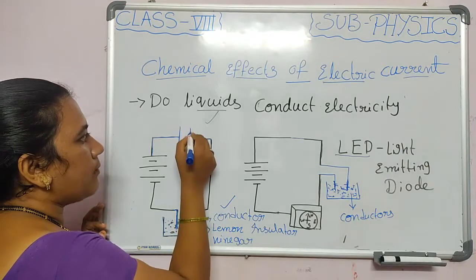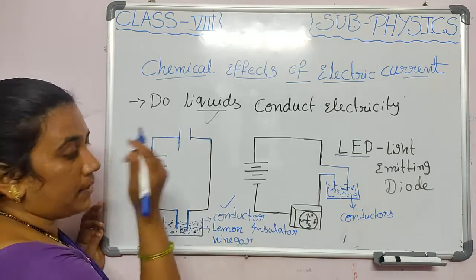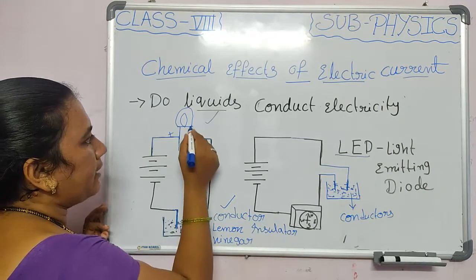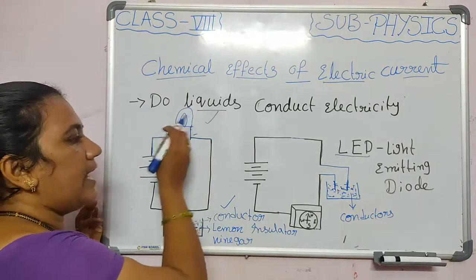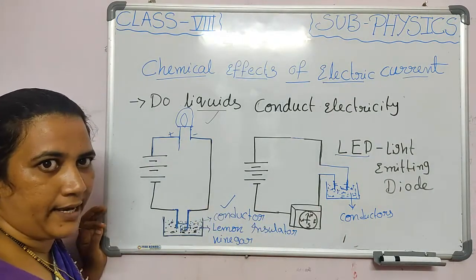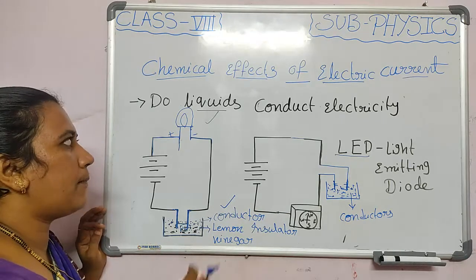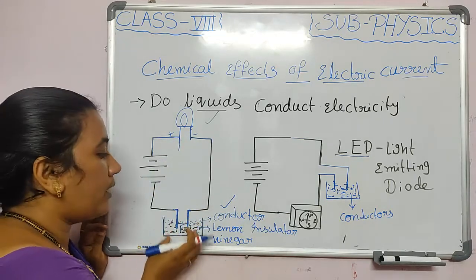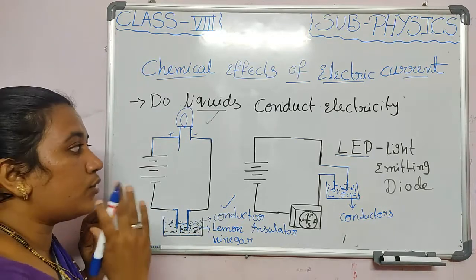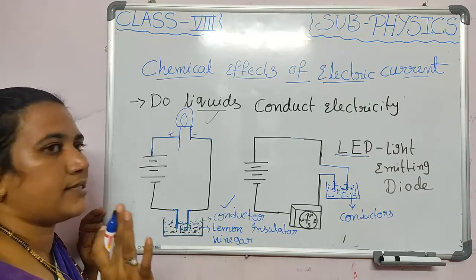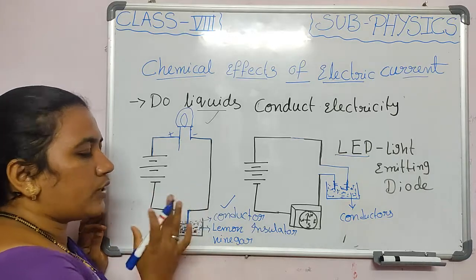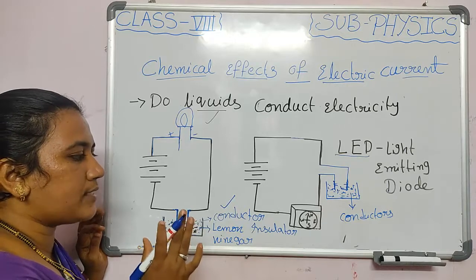For LED bulbs, there are two terminals: one long and one short. The long terminal should always connect to the positive side and the short to the negative side. The LED can also indicate whether a liquid is a conductor or insulator, but it may give very dim light. We need to conduct this setup in a dark room to see whether the LED is glowing or not.